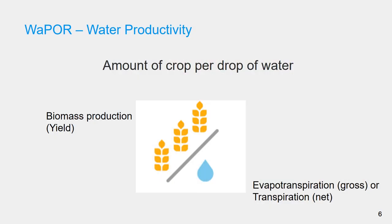The main objective of the database is to evaluate water productivity. In this presentation I focus on the biophysical water productivity in terms of the amount of crop per drop of water. This is calculated in the WAPOR database as the total biomass production divided by the evapotranspiration, defined in WAPOR as the gross water productivity, or divided by transpiration, defined as the net water productivity over the cropping season.